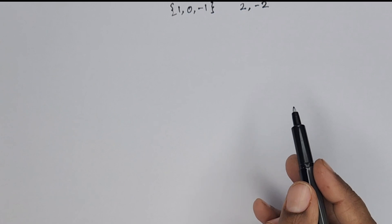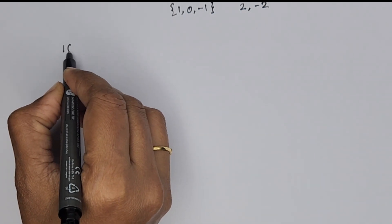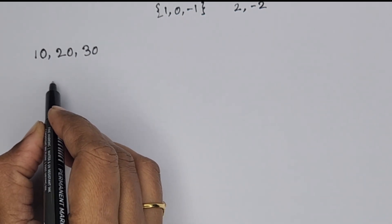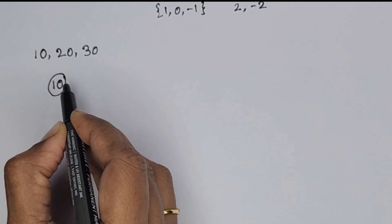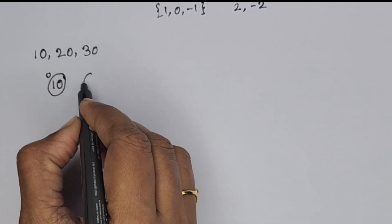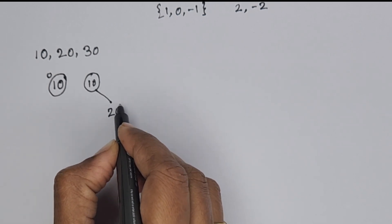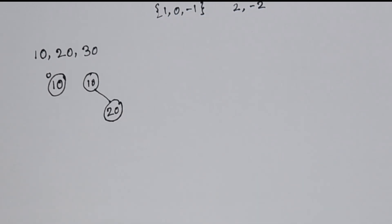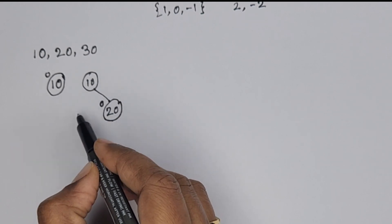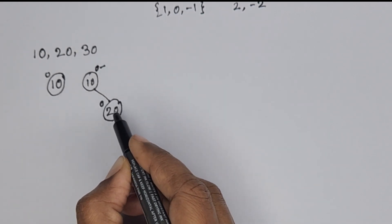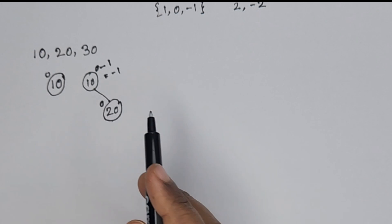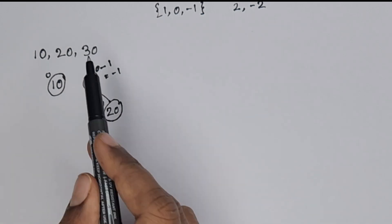The first situation: insert elements 10, 20, 30. Insert 10 — balance factor is 0. Insert 20 — 20 is greater than 10, so insert right of 10. Balance factor of 20 is 0. For 10: no left subtree, right subtree height is 1, so 0 minus 1 equals -1. The tree is still balanced. Now insert 30 — 30 is greater than 10 and greater than 20, so insert right of 20.